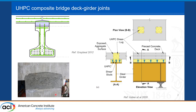UHPC can be used to connect bridge elements — for example, to connect precast bridge girders with slabs in order to achieve composite behavior. These are two examples of connections to link the girders to the slab. In this case, the UHPC is required to transfer the horizontal shear flow, and we may get an interface shear problem at the UHPC interface due to direct shear failure.